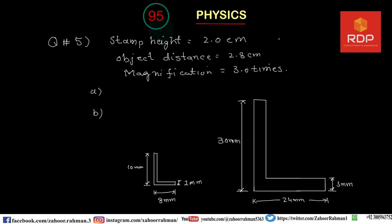I have written here the data. The height of the stamp is 2 cm. Through a hand lens placed 2.8 cm from the stamp — so this is the object distance, 2.8 cm. The next information is that the image he sees appears to be magnified three times. So the magnification of the image is three times that of the original.